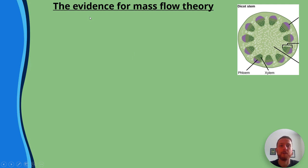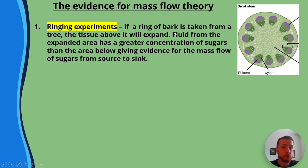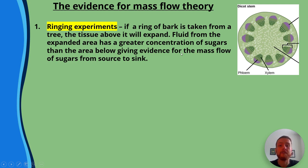The evidence for mass flow theory: first, ringing experiments. If a ring of bark is taken from a tree, the tissue above it will expand. Also, fluid from the expanded area has a greater concentration of sugars than the area below, giving strong evidence for the mass flow of sugars from source to sink.